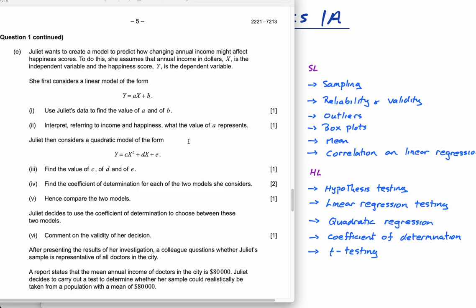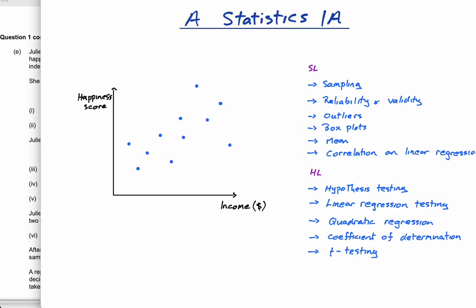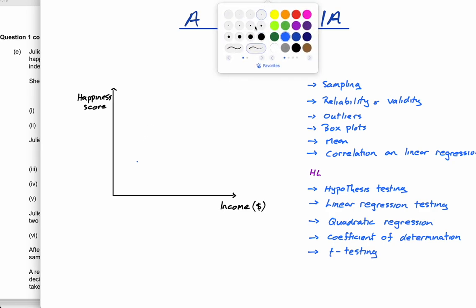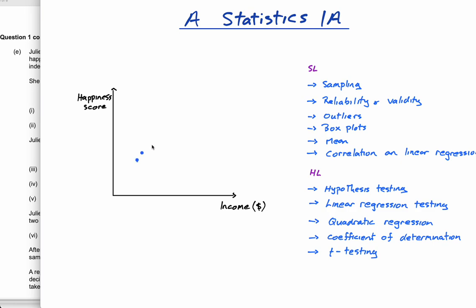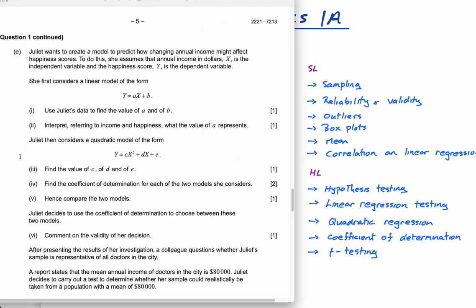And then she looks at a quadratic model, because maybe there's a situation where as you earn more money, yes, you start getting happier because you're earning more money. But maybe what happens is the people that are earning so much money, maybe they're the people that are actually working too much. And that's why they're earning so much money, and they're actually not happy. And maybe it comes down. Maybe it does, maybe it doesn't. I don't know. Perhaps that's why she's considering using a quadratic model. And when you're talking about this in your IA, you mention all these things. You say, okay, well, why would I even consider a quadratic model?